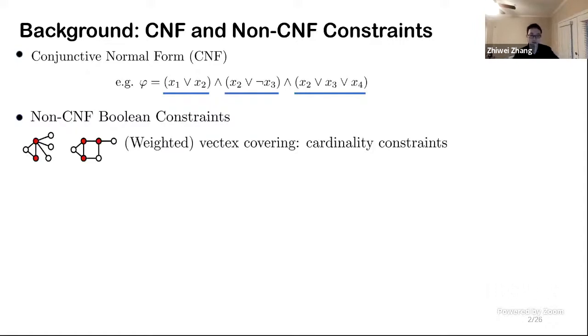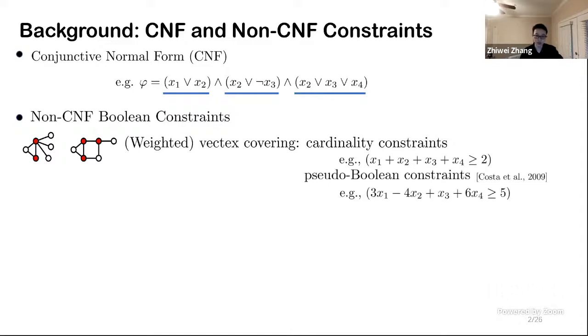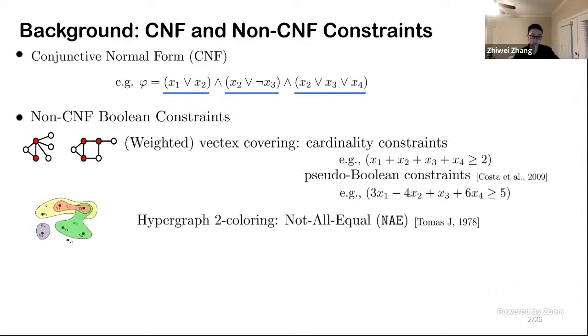In graph theory, there are a lot of examples. For instance, for vertex covering, it's more convenient to represent this problem by either cardinal constraints or pseudo-Boolean constraints. Another example is the hypergraph two-coloring, where not all equal constraints is the most natural representation.